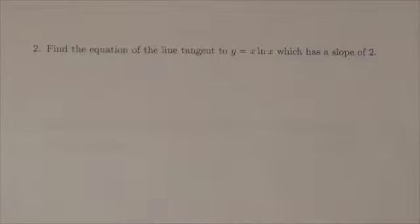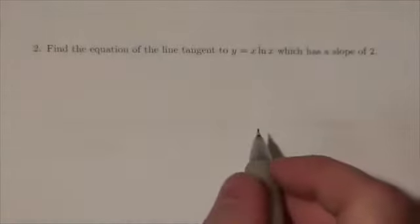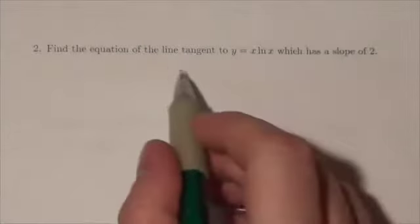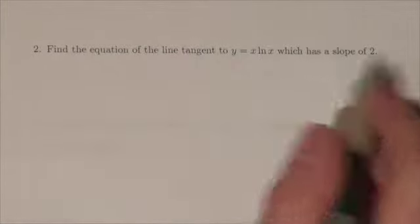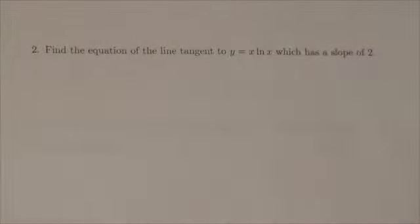All right, hi everybody. This is the Math 31 exponential and logarithmic functions review. This is question 2: Find the equation of the line tangent to y equals x ln x which has a slope of 2. Now this is kind of interesting because we're not given a whole lot of information here.